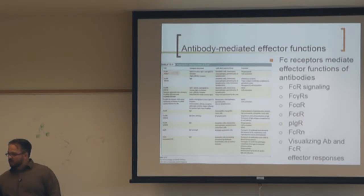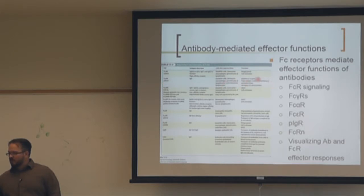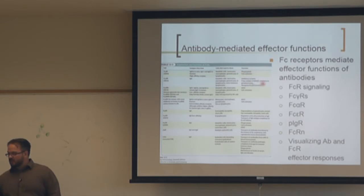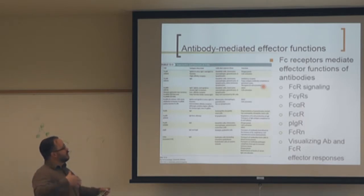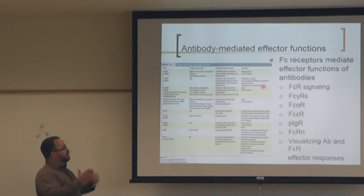FC gamma receptor 1 is involved in phagocytosis and cell activation. FC gamma receptor 2 is the inhibitory receptor — it traps antigen-antibody complexes, tends to be expressed in germinal centers, and abrogates B cell activation. It is lower affinity, so you need more antibody to activate it.